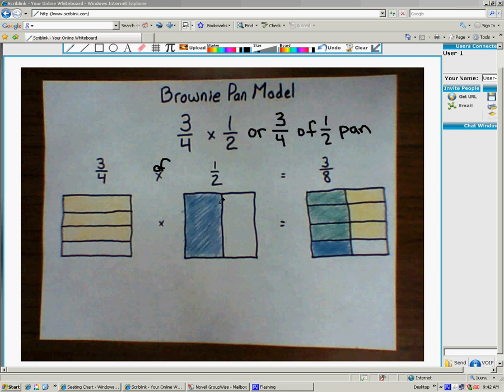Generally the kids will start out by drawing the 1 half first, because that's what the pan of brownies would look like when they walk up and see what's left. So, they would have a half a pan remaining. They only want 3 fourths of that.